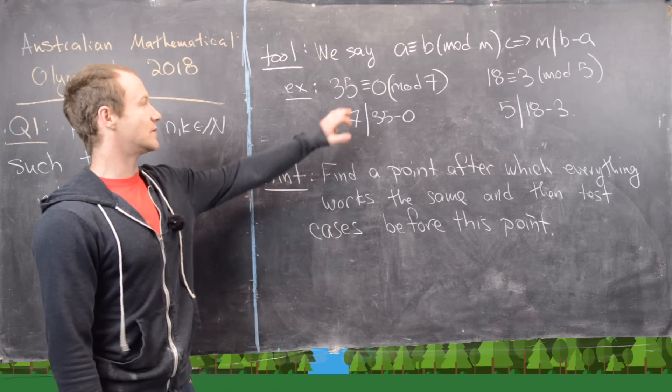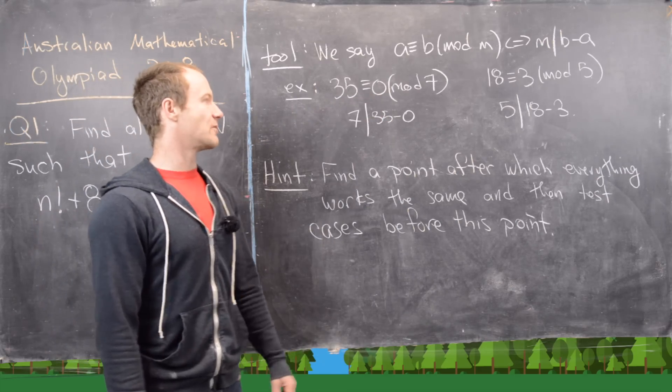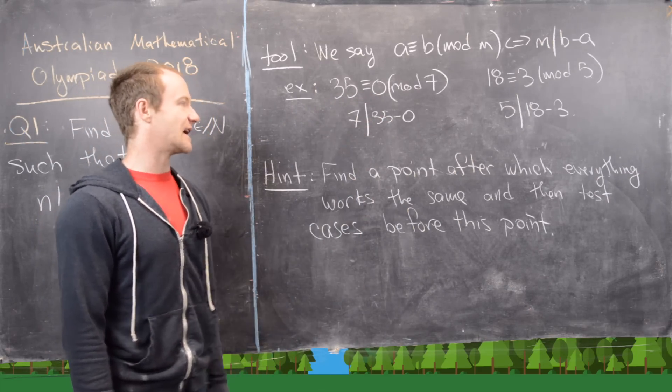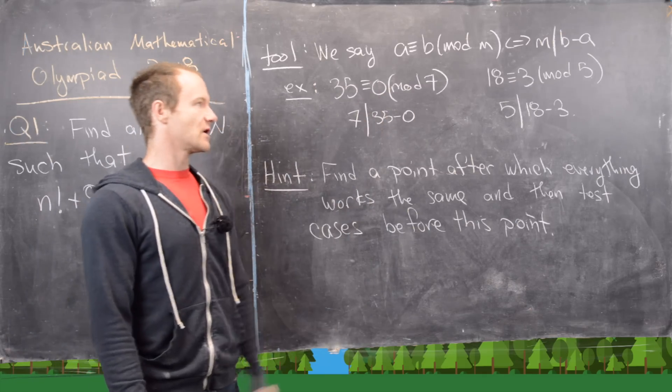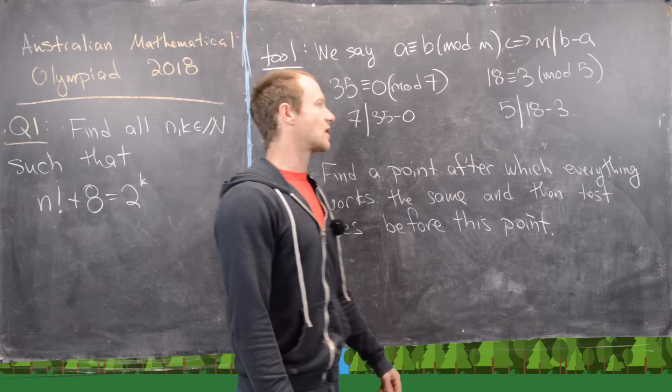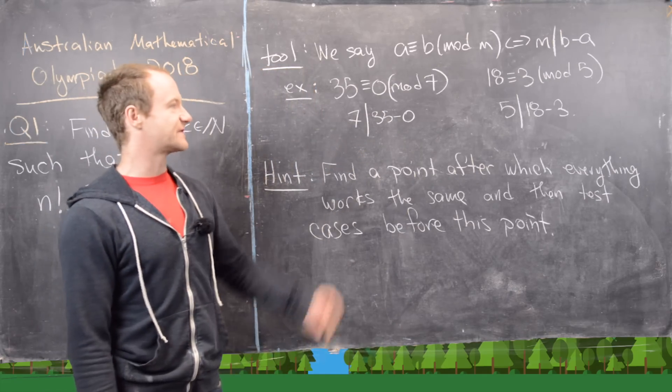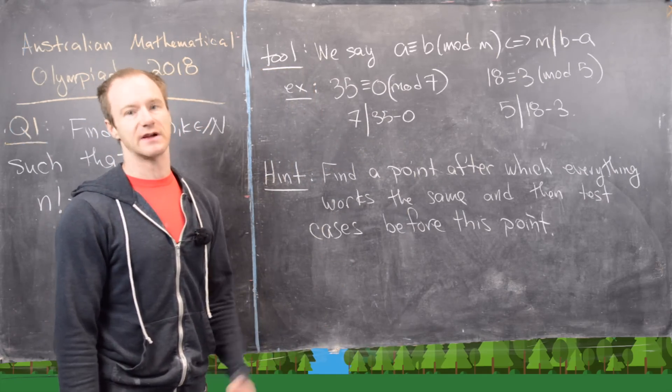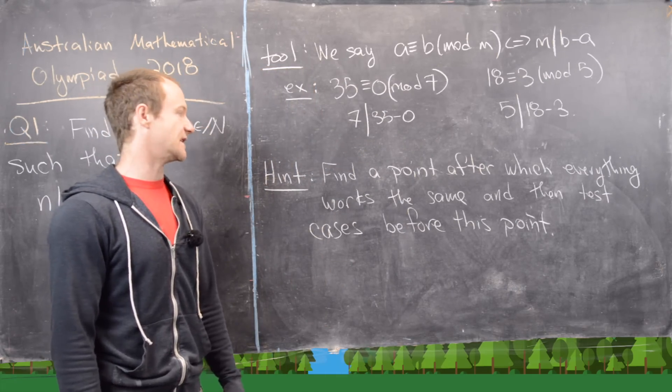So here's some examples. 35 is congruent to 0 mod 7, and that's because 7 divides 35 minus 0. And then 18 is congruent to 3 mod 5, and that's because 5 divides 18 minus 3. 18 minus 3 is obviously 15.